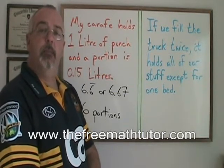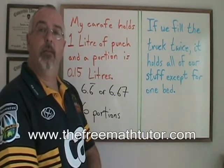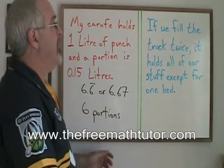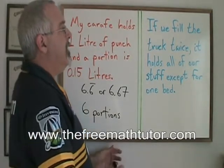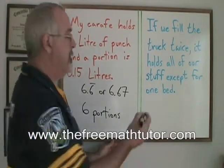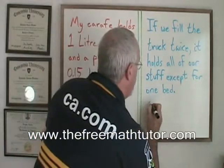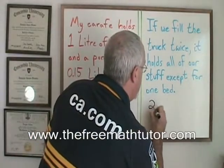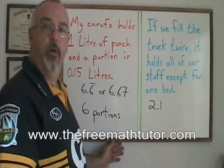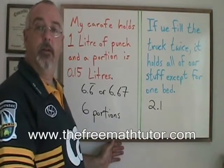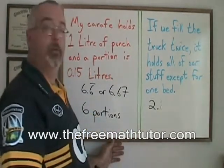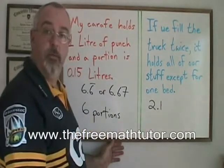The question is, how many truckloads do we have to bring to the new apartment? Let's say we divide the volume of all of the furniture by the volume of the truck and we get 2.1. This tells us that we have 2.1 truckloads of furniture, and the normal rounding rules would have us round that down to two.